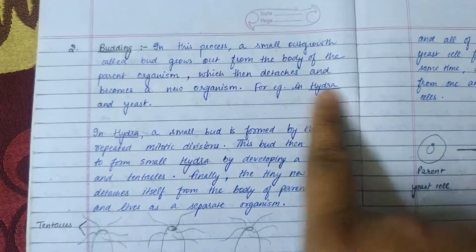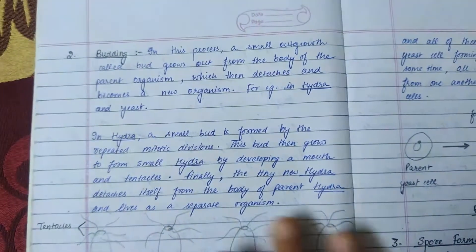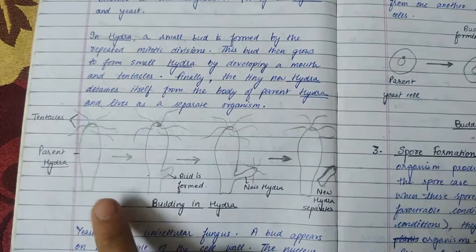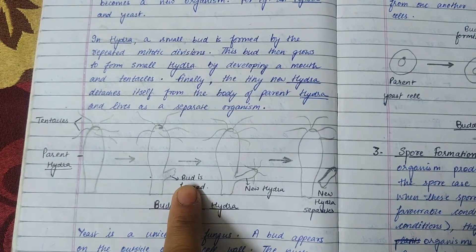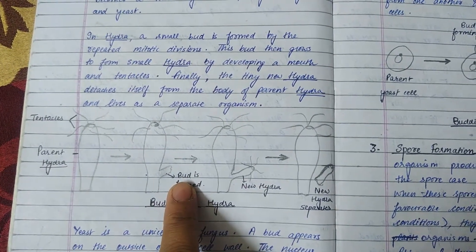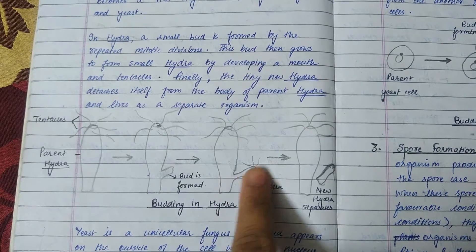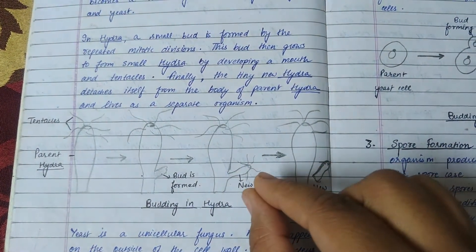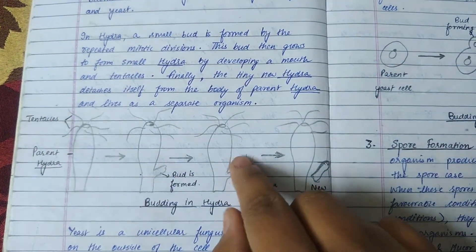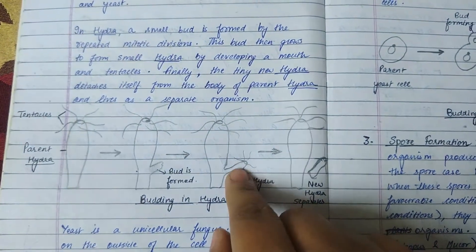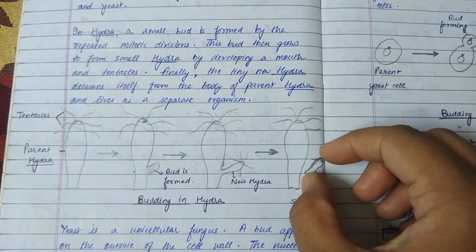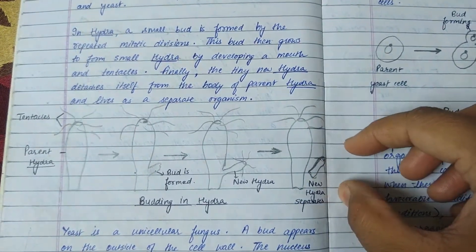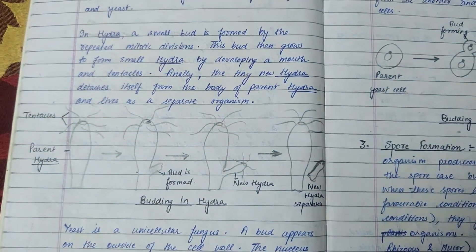In hydra, a small bud forms by repeated mitotic division. This bud grows and develops a mouth and tentacles, forming a small hydra. Finally, this tiny new hydra detaches from the parent body and lives a separate life.